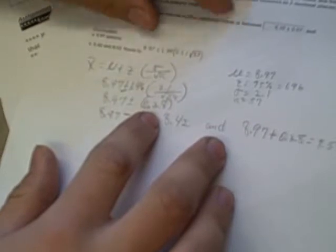And then we find standard deviation divided by the square root of N, which gives us 0.28. 0.28 multiplied by the Z value, 1.96, and we get to find the lower value.